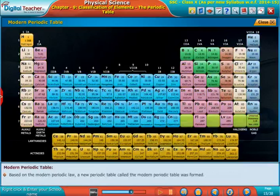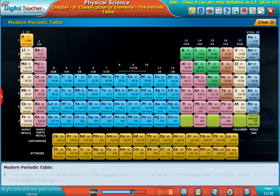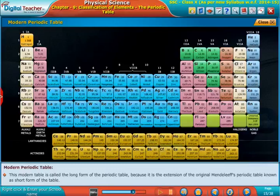Based on the modern periodic law, a new periodic table called the modern periodic table was formed. This modern table is called the long form of the periodic table because it is the extension of the original Mendeleev's periodic table, known as the short form of the table.